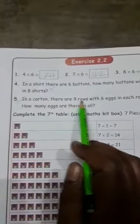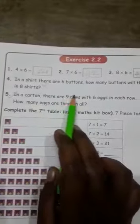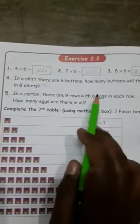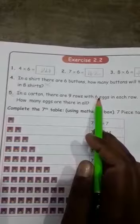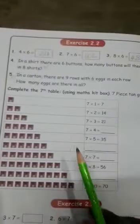Do the fifth sum. In a cartoon there are nine rows with six eggs in each row. How many eggs are there in all? That is, in a cartoon there are nine rows with six eggs, so one row in each row is how many eggs are there in all. And you have to complete the seventh table.